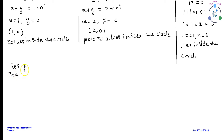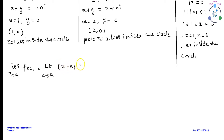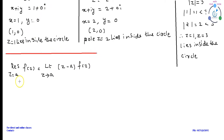In Cauchy's integral formula, we have to apply partial fraction if both poles Z equal to 1 and Z equal to 2 lie inside the contour. But when applying Cauchy's residue theorem, partial fraction is not needed.